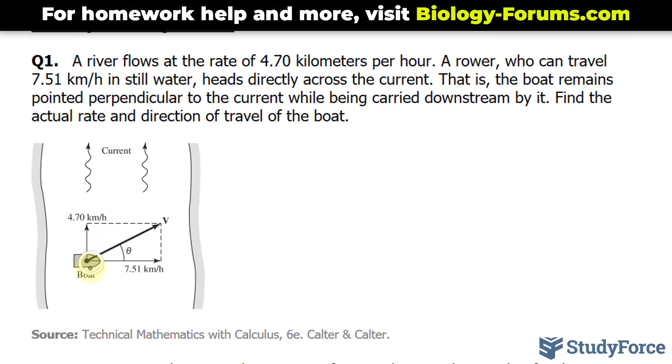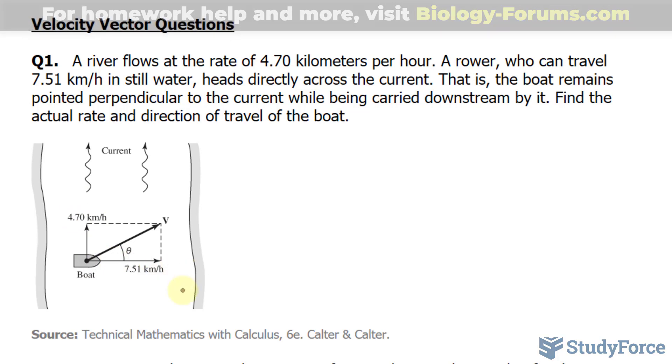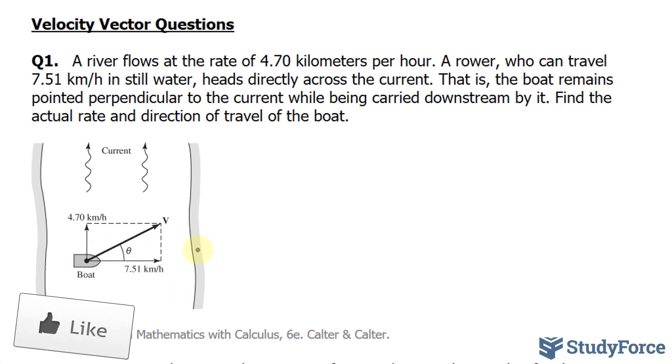So we're told there's a current pushing him at 4.70 km per hour and he's moving 7.51. To find the speed in this direction, we can use the Pythagorean theorem. We have the hypotenuse here, one of the legs here, and the other leg here. So let's go ahead and write it out.